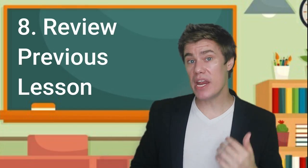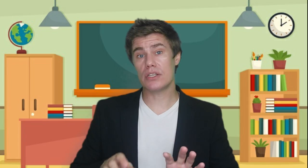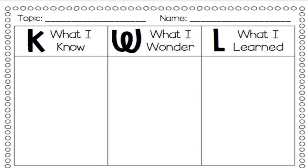Number eight: review previous lessons. This is a good way to start and prepare them for the lesson ahead. Review earlier sessions. A simple way to start class is with the help of a KWL chart: What do I know? What do I want to know, or what do I wonder? And what have I learned?